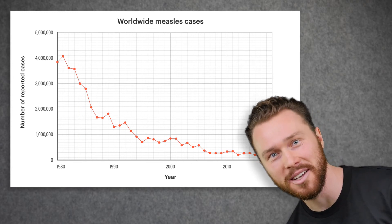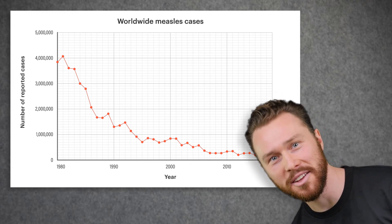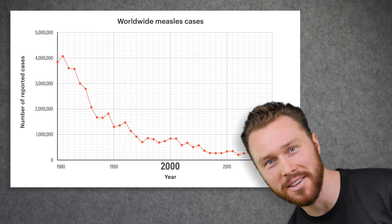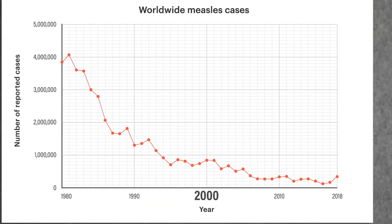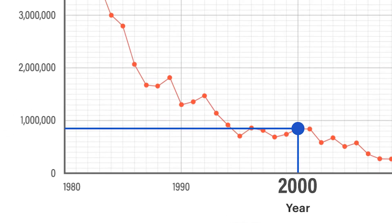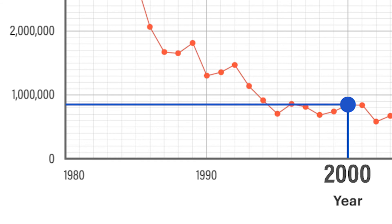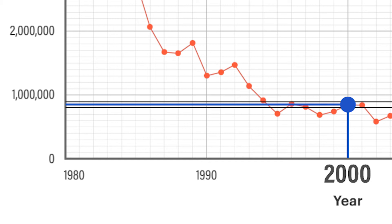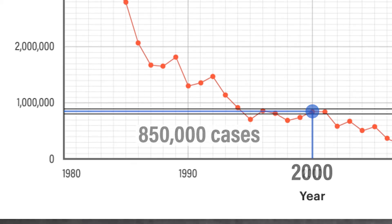For a slightly trickier example, let's find the number of cases in the year 2000. We go up from 2000 on the x-axis until we hit the line, then read across to find the value on the y-axis. This value is about halfway between 800,000 and 900,000 cases, so we can estimate that the number of measles cases was about 850,000.